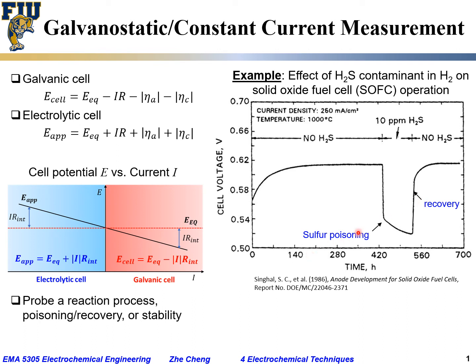You can use this type of experiment to understand the reaction process, including poisoning and recovery. The actual anode half-cell reaction for the hydrogen electrode — because you have H₂S contaminant in hydrogen — on the hydrogen electrode involves hydrogen combining with O_O (oxygen sitting at an oxygen lattice position) to form H₂O (water vapor, gas phase).